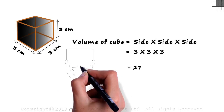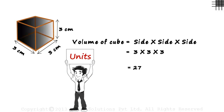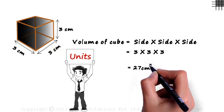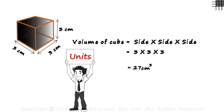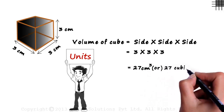But wait, are we forgetting something? Yes, it's the units of the answer. The units of each side are also multiplied to get centimeters cubed. That's the precise answer — the volume of the cube is 27 centimeters cubed, which can also be written as 27 cubic centimeters.